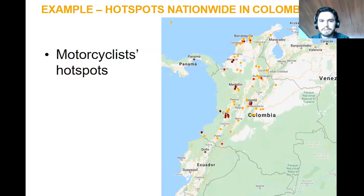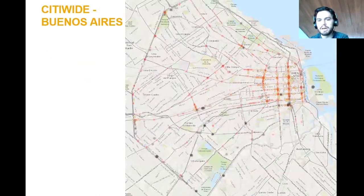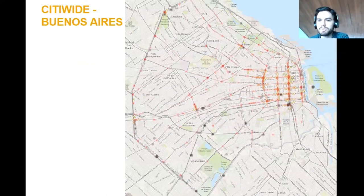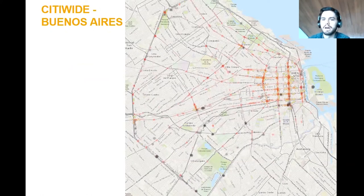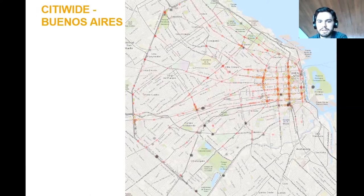This is another example from Buenos Aires, Argentina. We use both hotspot and kernel to identify the places where we should collect speed data for speed management. We are focusing on the places with the highest amount of victims and checking which of those have high speeds and therefore would have higher potential for improvement.